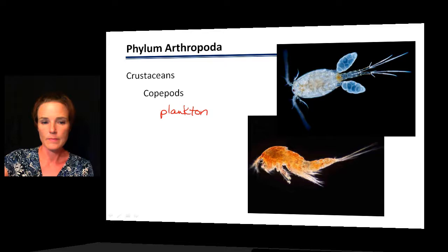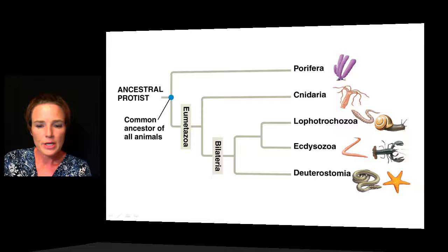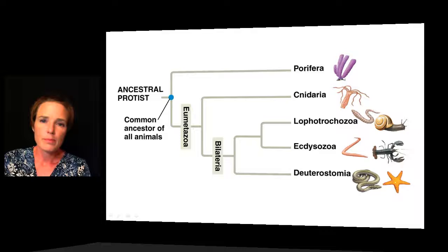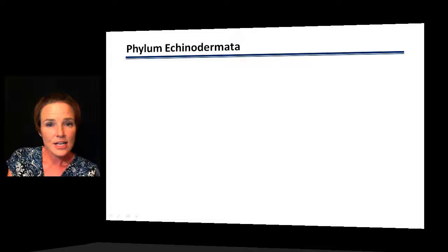Finishing up this chapter, the last clade we'll look at is Deuterostomia. Deuterostomia can be broken down into echinoderms and chordates — chordates will be covered in the next chapter. There is a lot of variety within Deuterostomia, and most of the grouping in this clade has been based on DNA similarities rather than morphological similarities. Phylum Echinodermata includes many animals that are very slow moving.